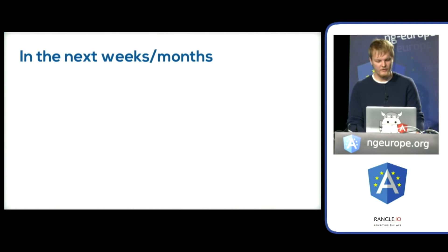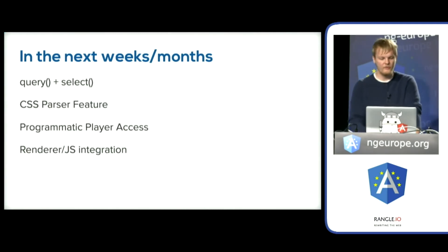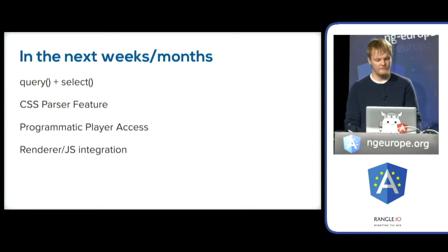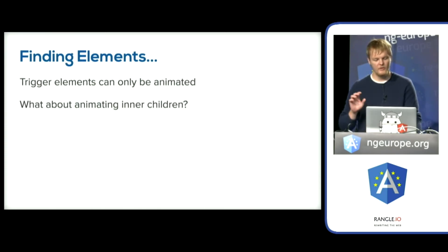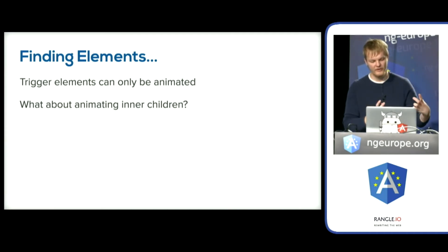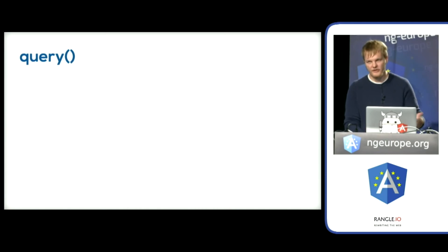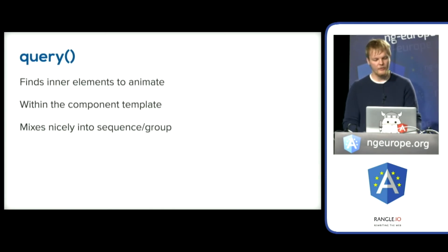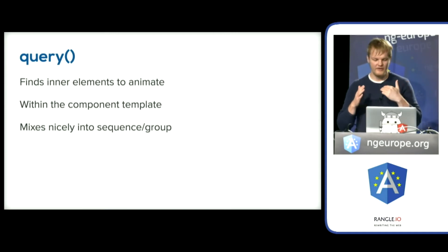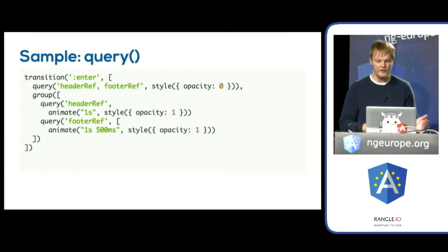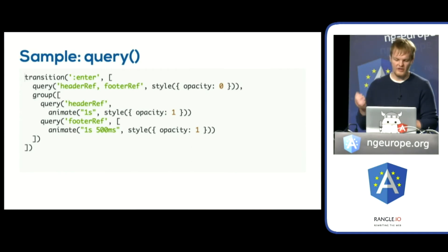Features coming very soon: the big one in the next few weeks is query. After that, we'll have CSS partial support and more programmatic access to animations. Right now all animation code interacts only with the trigger element, but with query you can find sub-elements to animate. Query works exactly the same way as viewChild and contentChild — you can pass in a component type or a reference, and it will find the element to animate. So if I have a header reference and a footer reference, I can find those, change styles on them, and using group, animate multiple elements at the same time.